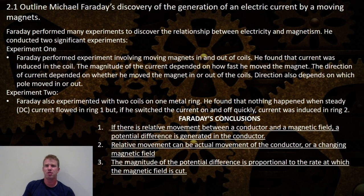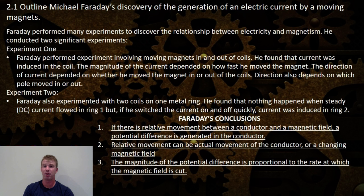Experiment 2: Michael Faraday also experimented with two coils on a metal ring. He found that nothing happened when a steady DC flowed through ring 1. But when he switched the current on and off quickly, a current was induced in the second ring.